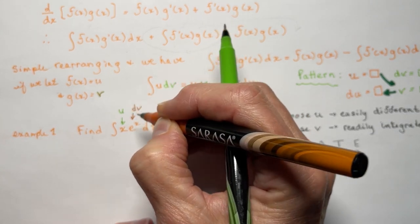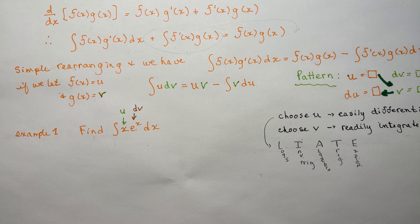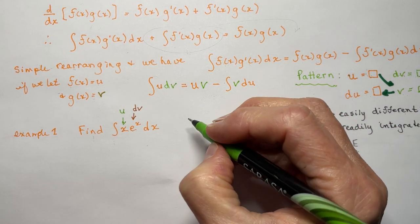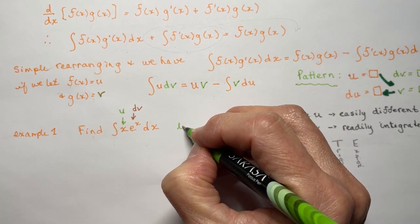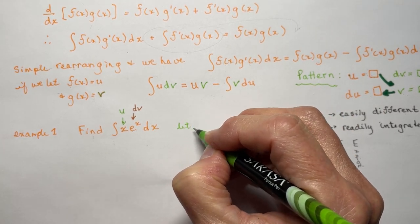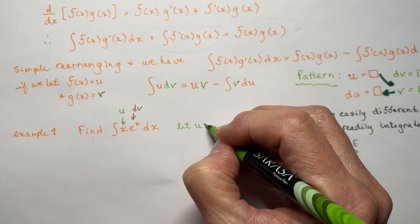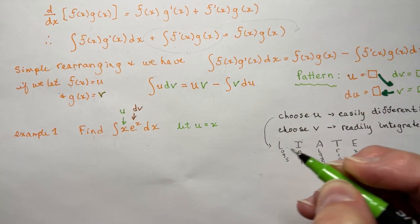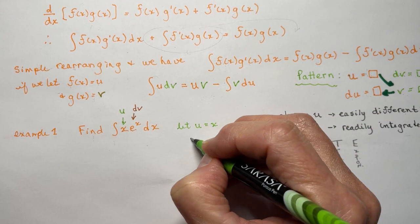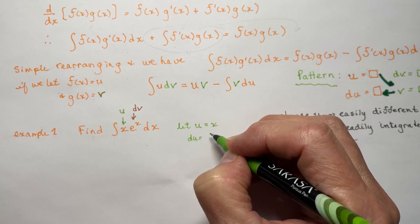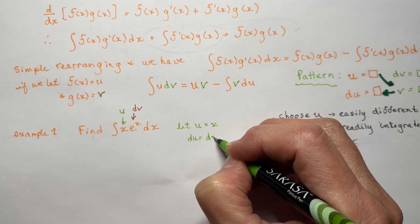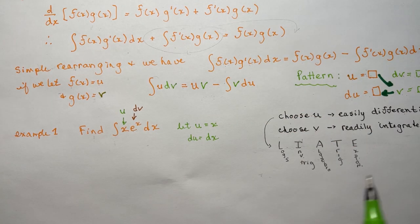So I'm going to say: let u equal x. So du is going to be 1·dx — don't forget the dx. So the derivative of x is 1.